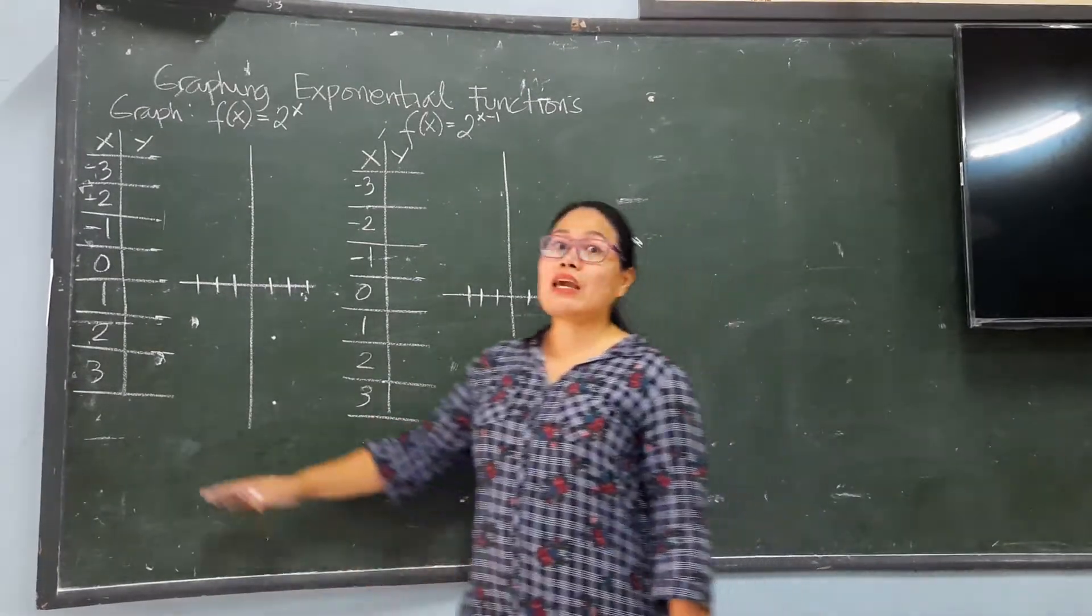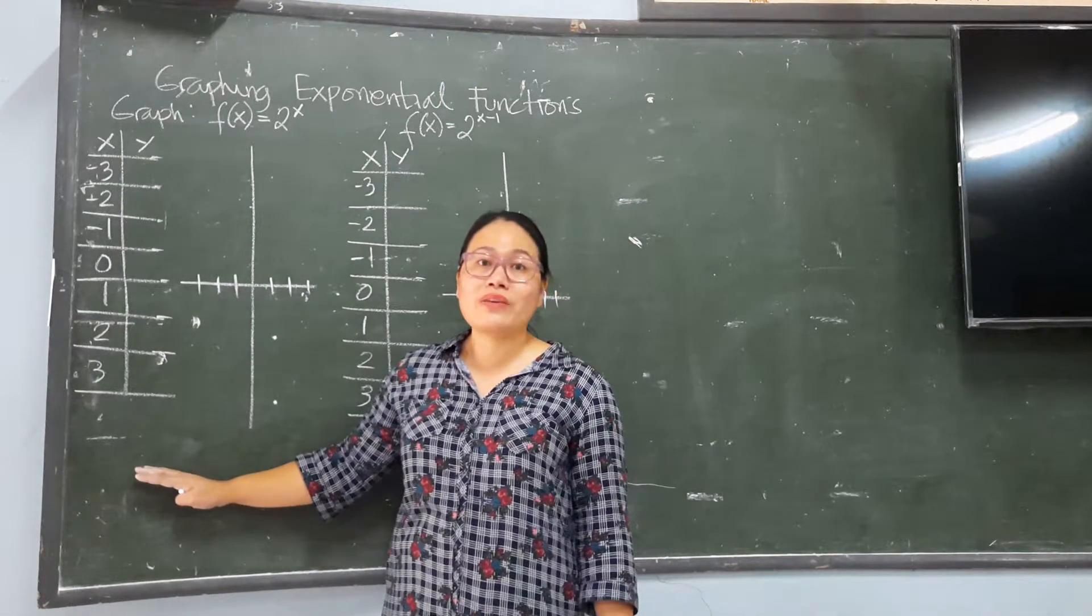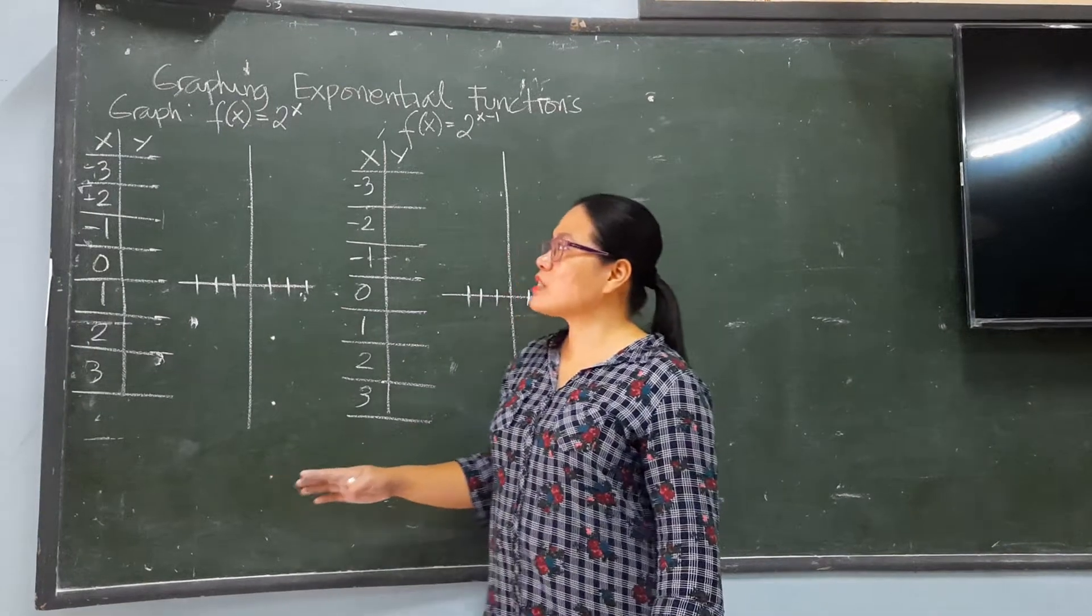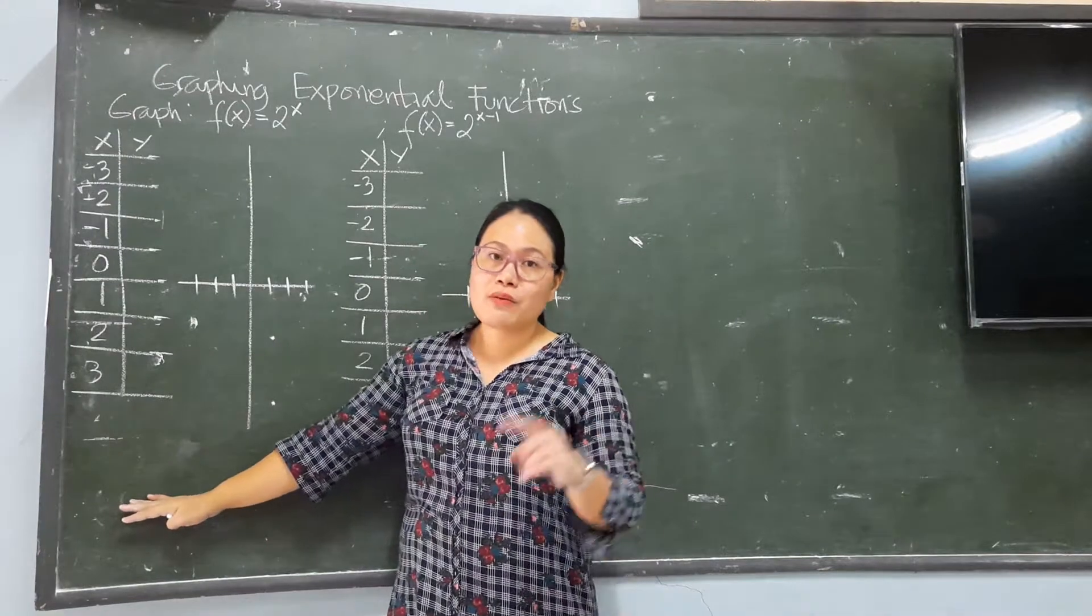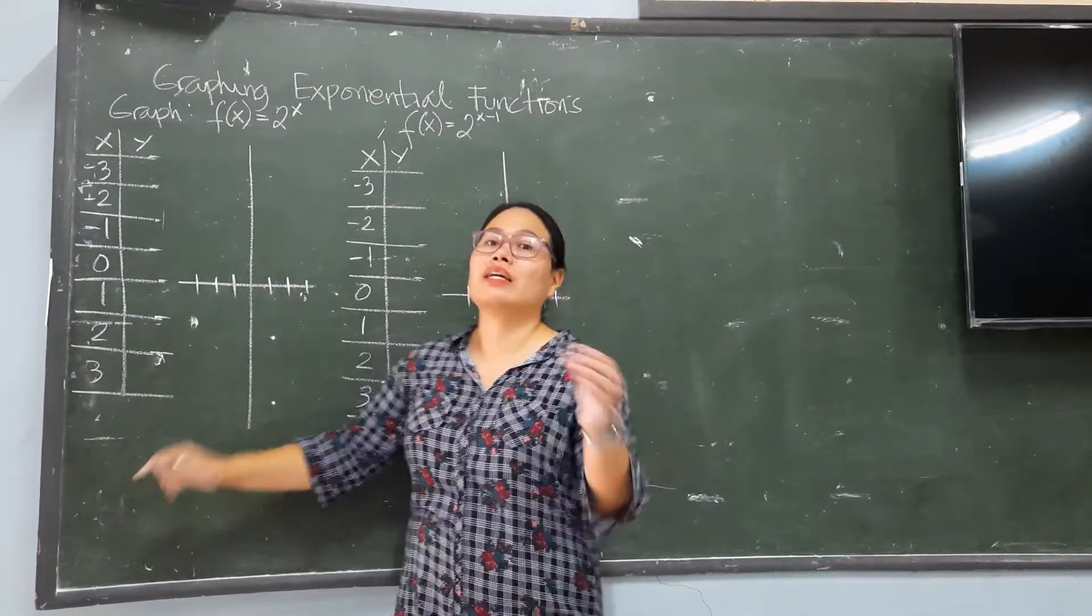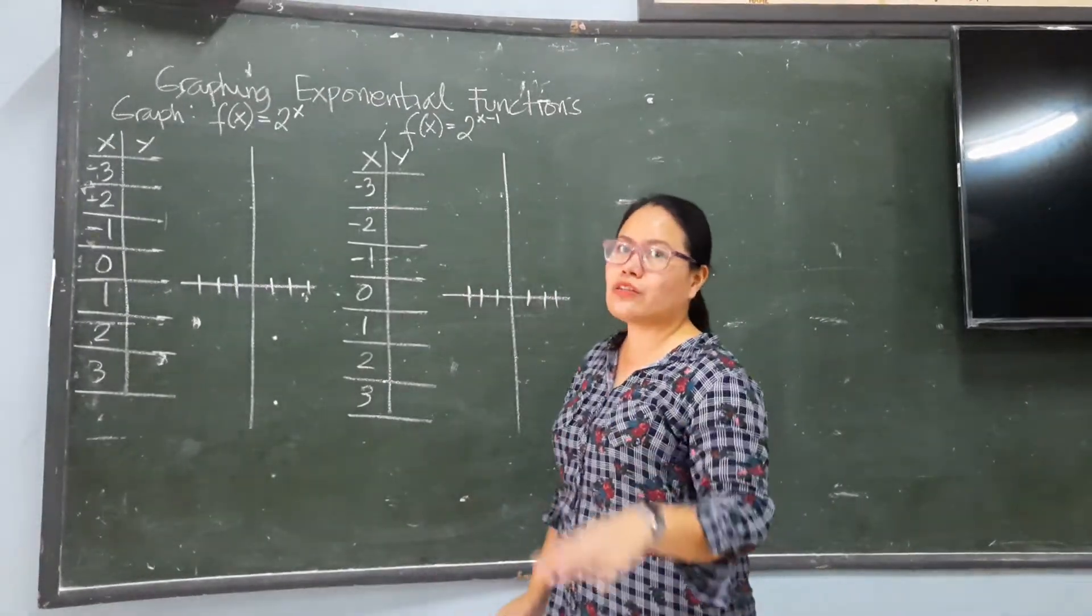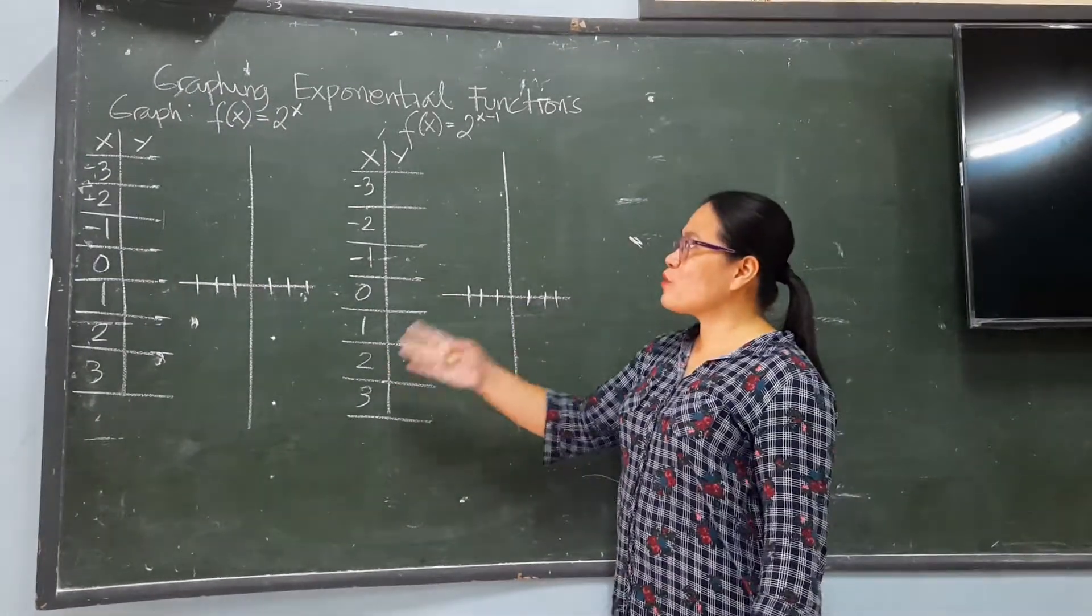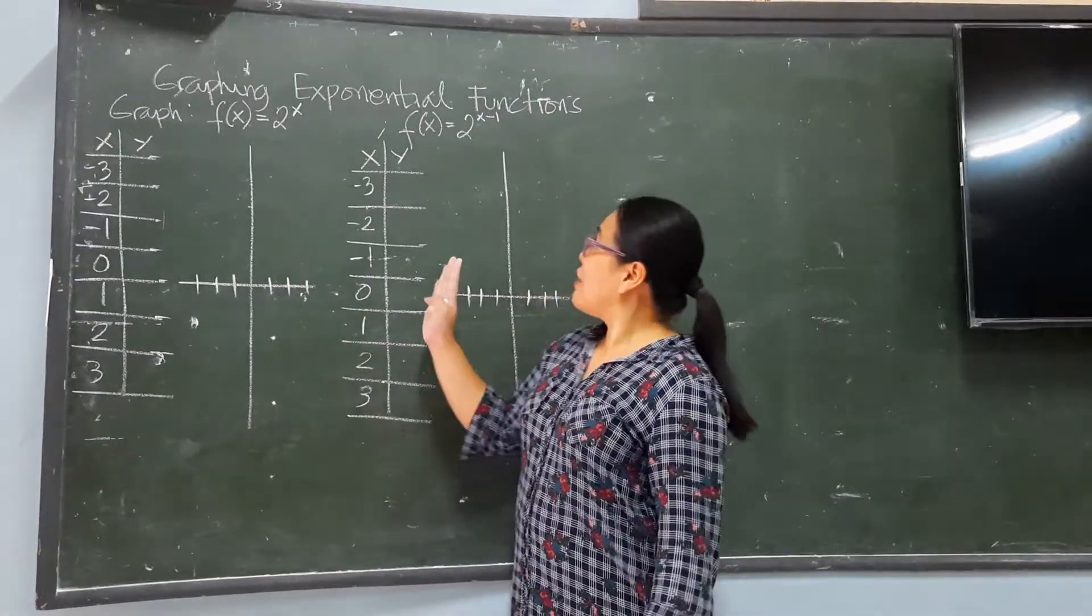In here, same with the last topic that we do in the inverse function when we graph, we will focus on the center. But this time, I put the value of X and the value of Y in a vertical formation. But the one that was given to you during our previous meeting, it's all in the horizontal formation. But they are still the same, vertical or horizontal. So, for this one, let us solve this graph function.